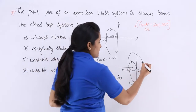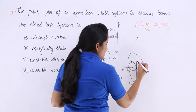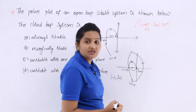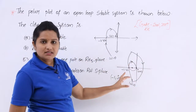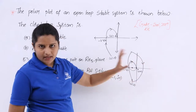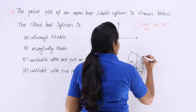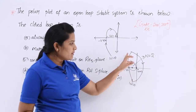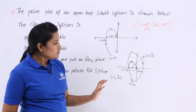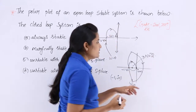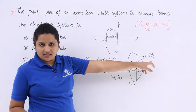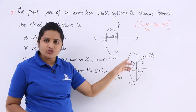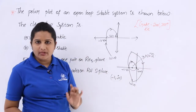The critical point is minus 1 comma j0. Since minus 1.42 is here, minus 1 will definitely be enclosed in this circle. You can observe the direction — this point is now enclosed twice by the Nyquist contour. The number of encirclements is 2, and since these are in the reverse direction, N is equivalent to minus 2.